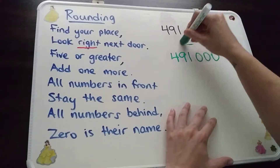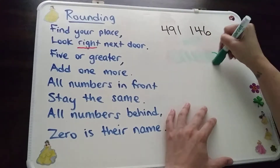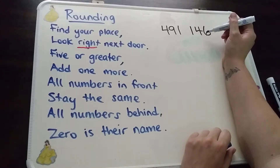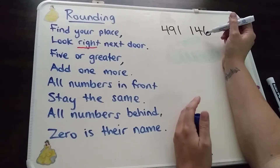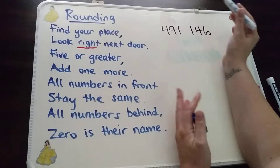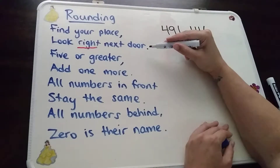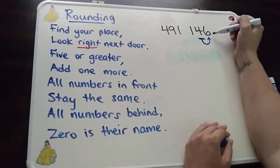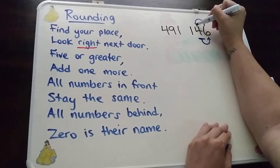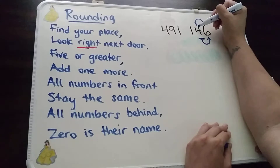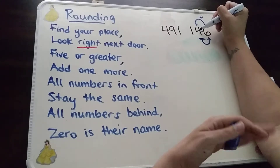And finally, one more example with the same number, because the poem does work for everything. We've got the same number, 491,146, but this time we're going to round it to the nearest tens place. Same thing with the poem: find your place, rounding to the nearest ten — there it is. Look right next door. Five or greater — yes, it is greater than five, it's a six — add one more. It helps if you think of it as a little circle, because you can't just stop here. You're adding one more to the original number that you were working with.